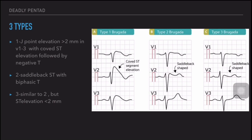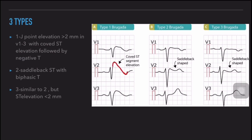There are three types of Brugada pattern. In Type 1 Brugada, there is a J-point elevation of more than 2 mm in V1 to V3, with a coved ST elevation followed by a negative T-wave. In Type 2 Brugada, the ST segment is saddleback-shaped with a biphasic T-wave — initially a positive T followed by a negative T. In Type 3, it is similar to Type 2, but the ST elevation is less than 2 mm.